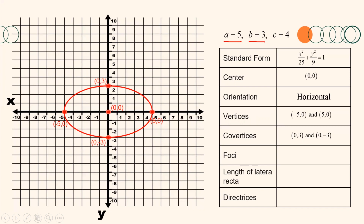The foci are collinear with the vertices, so they are also on the right and left of the center, 4 units away since c equals 4. Thus, the foci are the points (negative 4, 0) and (4, 0). The length of the latera recta is represented by 2b squared over a. Substituting the values, we get 2 times 9 over 5, which is 18 over 5 units. Finally, since the ellipse is horizontally oriented, the directrices are vertical lines with the equation x equals positive or negative a squared over c, giving us x equals negative 6.25 and x equals 6.25.